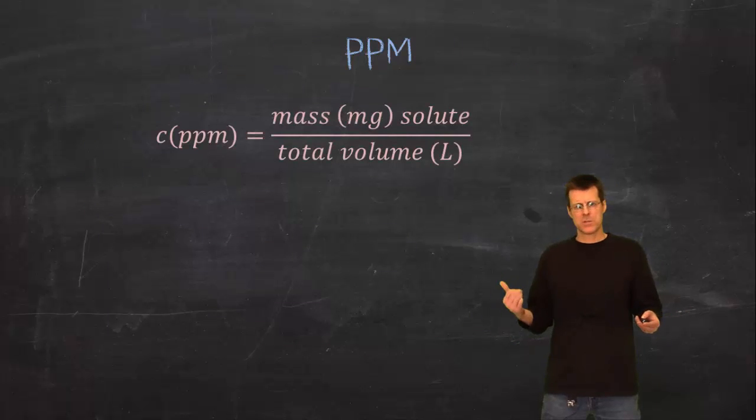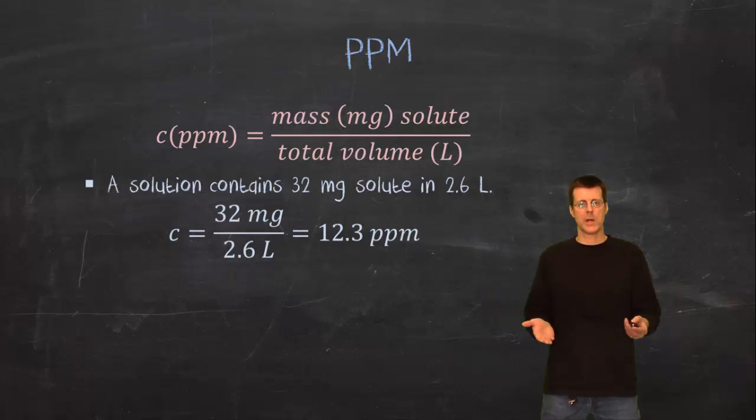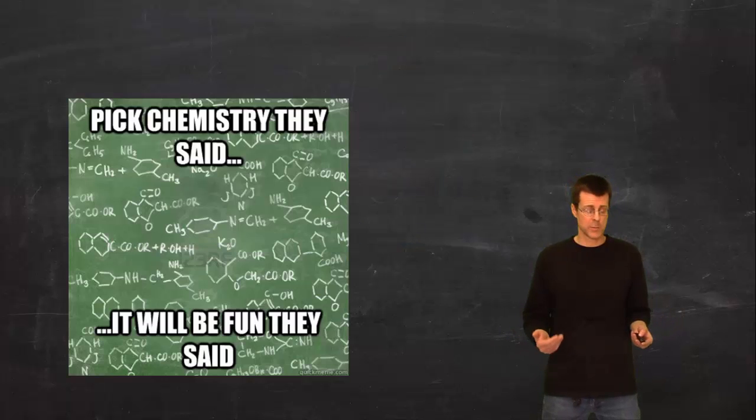And so it looks like that. And for parts per million, which you already know, if we had a question like this, if you have 32 milligrams in 2.6 liters, you do the mass divided by the total volume and you get the parts per million. It's really, there's nothing to it, it's actually pretty simple math.